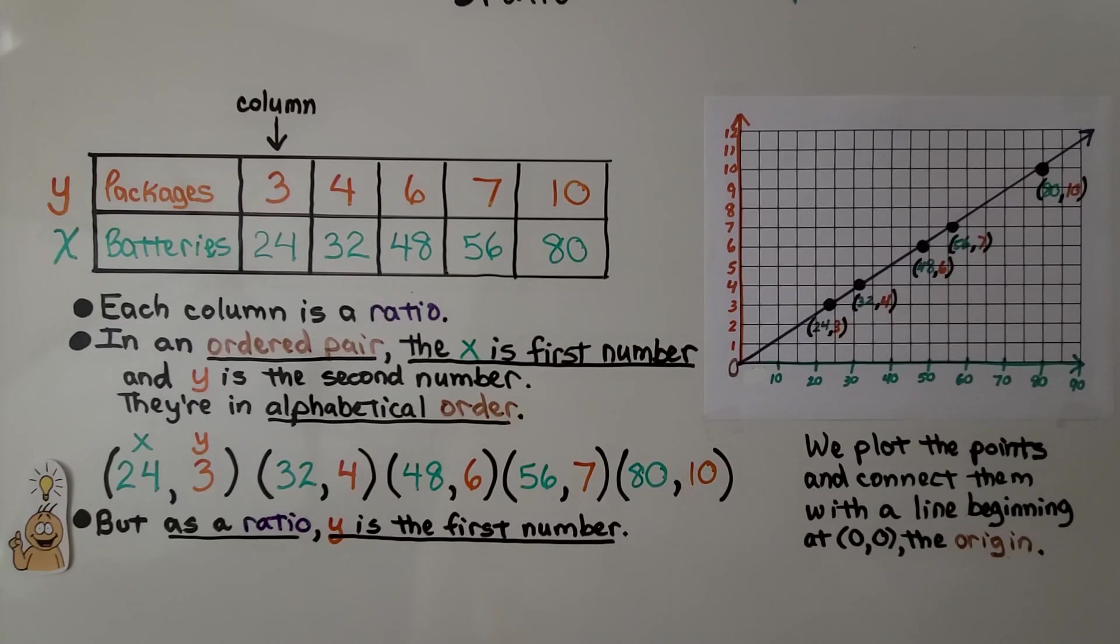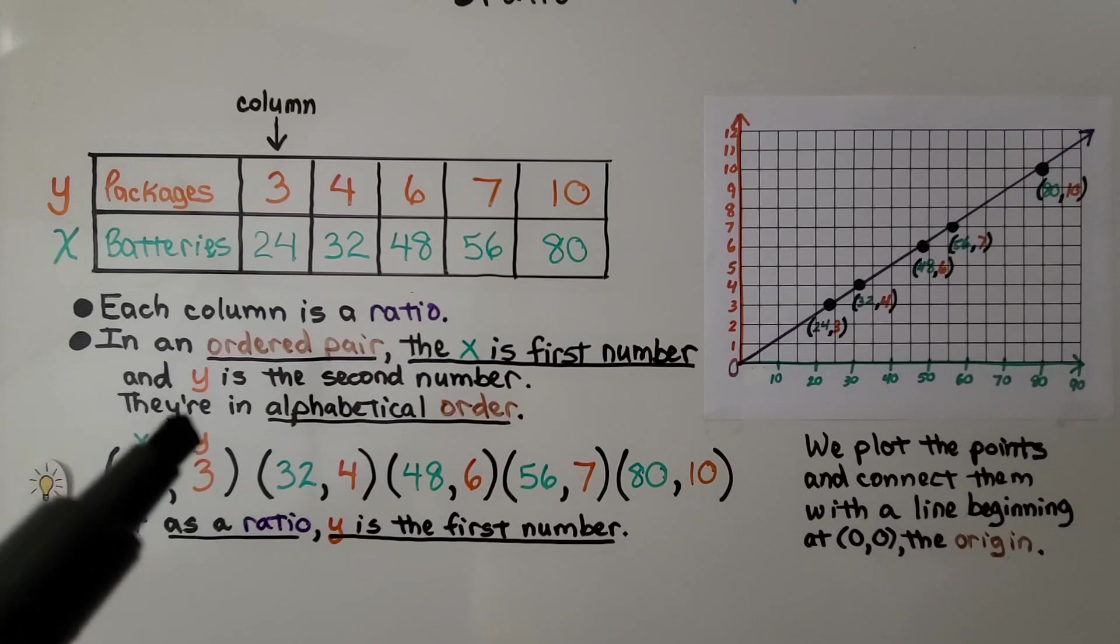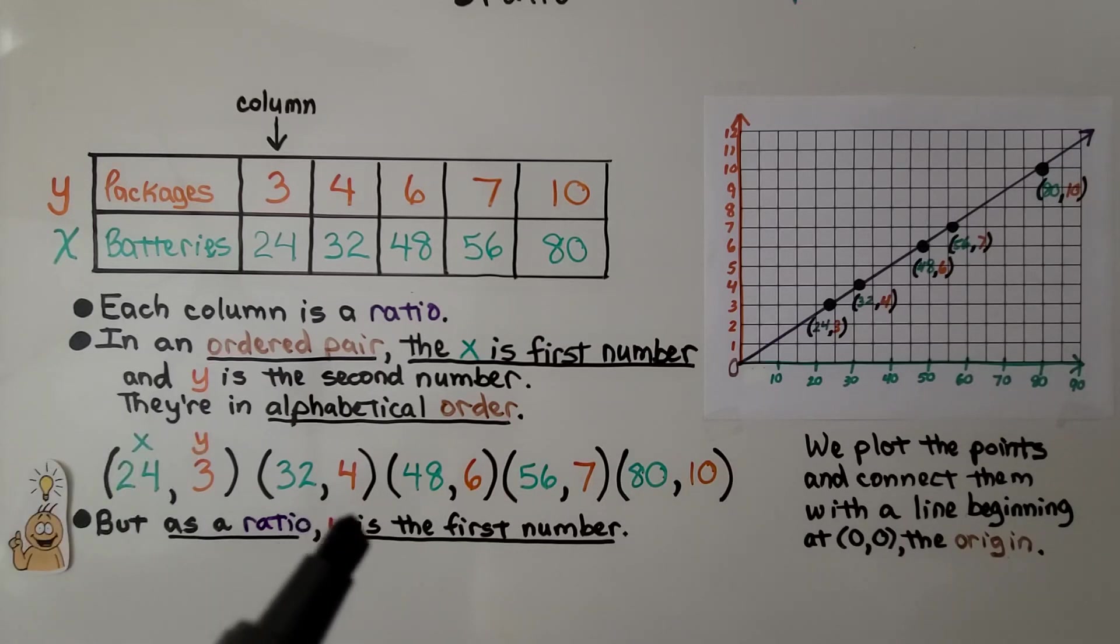So just remember to be careful when you're going from your table to the graph that this is the y value and that's the x value. But as an ordered pair, x comes first and then y. As a ratio, y is the first number, x is the second number.